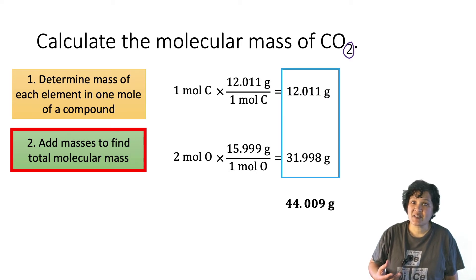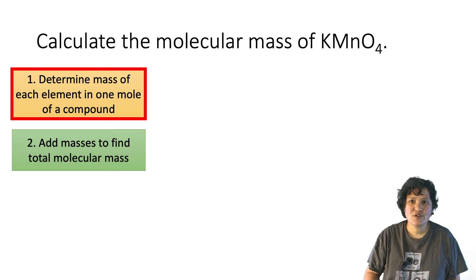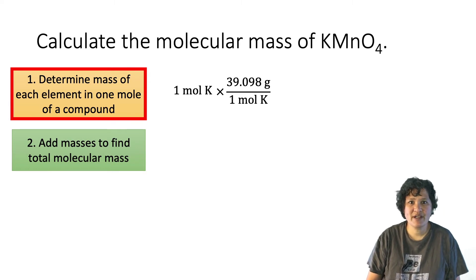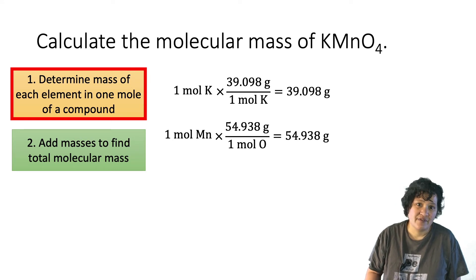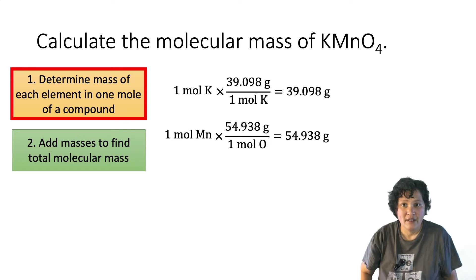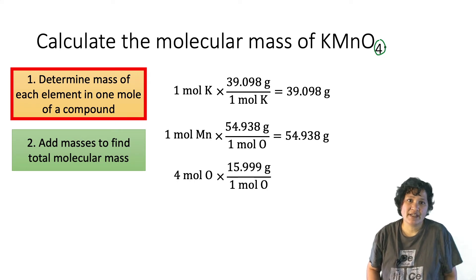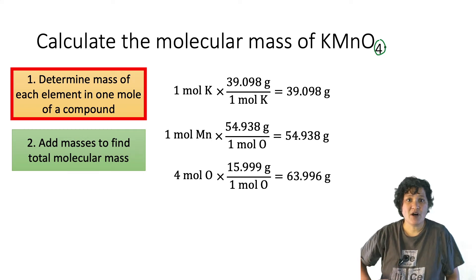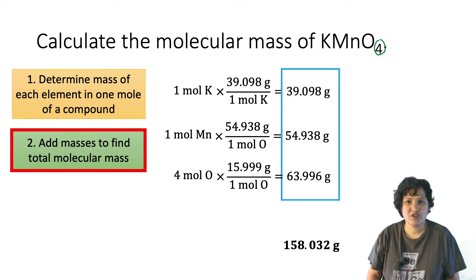You can use this process for any size of molecule. Here's a slightly larger one: potassium permanganate. We'll determine the mass element by element. The first element is potassium — one mole at 39.098 grams per mole gives 39.098 grams. Similarly, one mole of manganese at 54.938 grams per mole gives 54.938 grams. Finally, we have four moles of oxygen at 15.999 grams per mole, giving 63.996 grams. Adding all of these up, the molecular mass of potassium permanganate is 158.032 grams per mole.